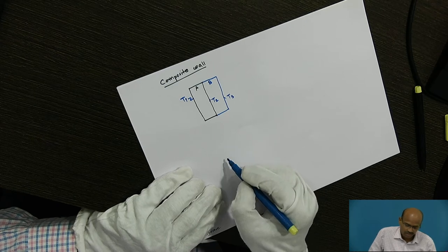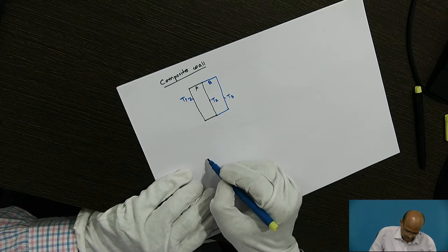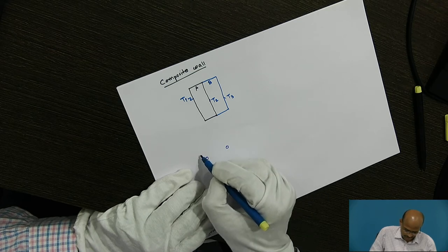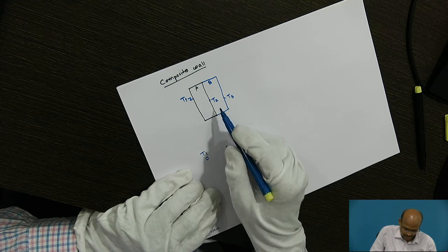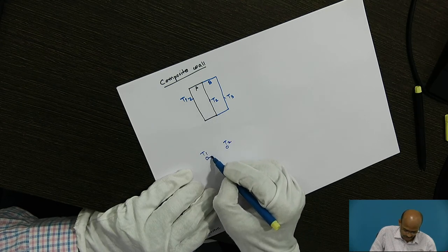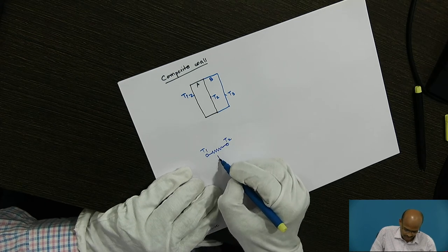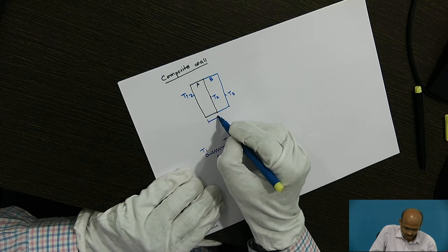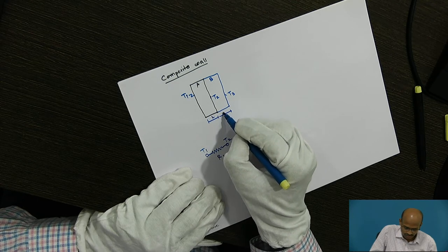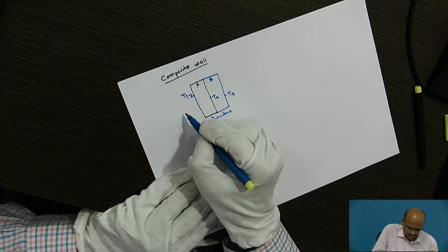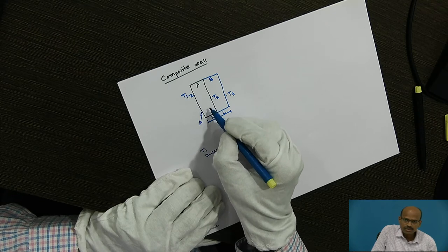Then their thermal network — I will be drawing here. For wall A, the left-hand side temperature is T1 and interface temperature is T2. There will be a conductive resistance R1. Wall A has thickness L and wall B also has thickness L. The area normal to the heat flow is the same in both cases.